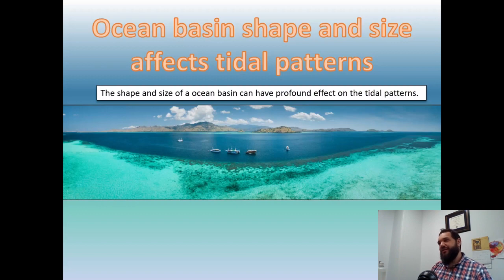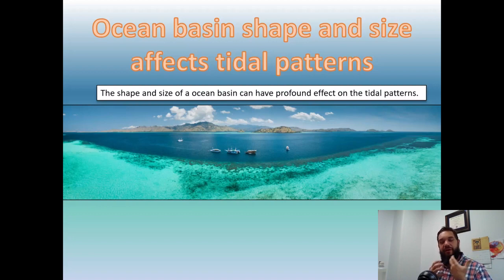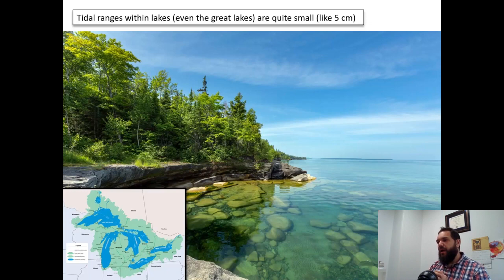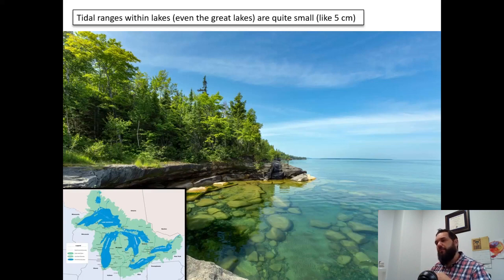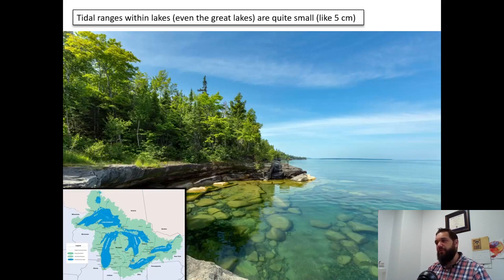Let's talk about ocean basins — the shape and size of the ocean basin — and how that affects the tidal pattern, since basin shape is one of the influencing factors of amphidromic points. Tidal range is just the difference between average low tide and high tide. Do lakes have tidal ranges? Yes, they do, but because the amount of water in a lake is relatively small compared to an ocean basin, the tidal ranges are very small — usually only about five centimeters. The Great Lakes only get tidal ranges of maybe five centimeters.